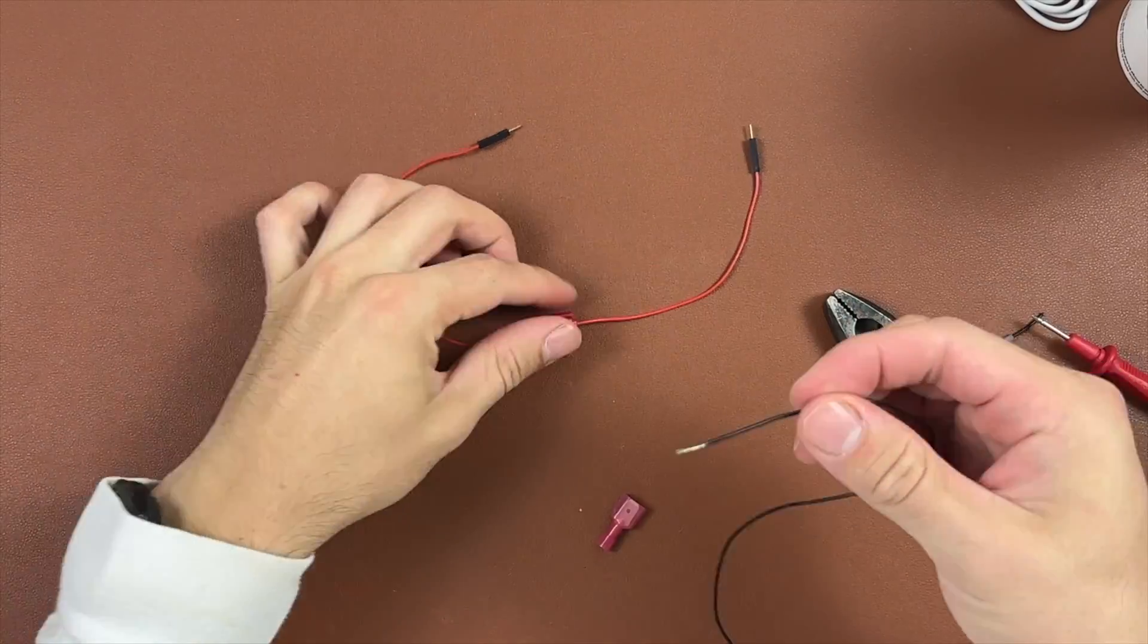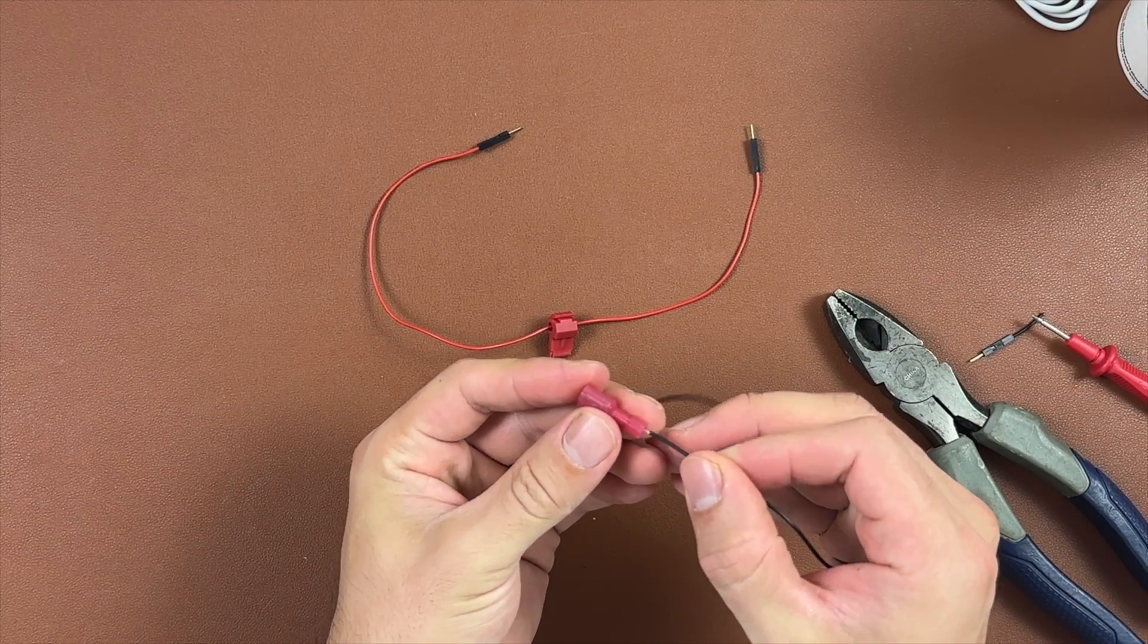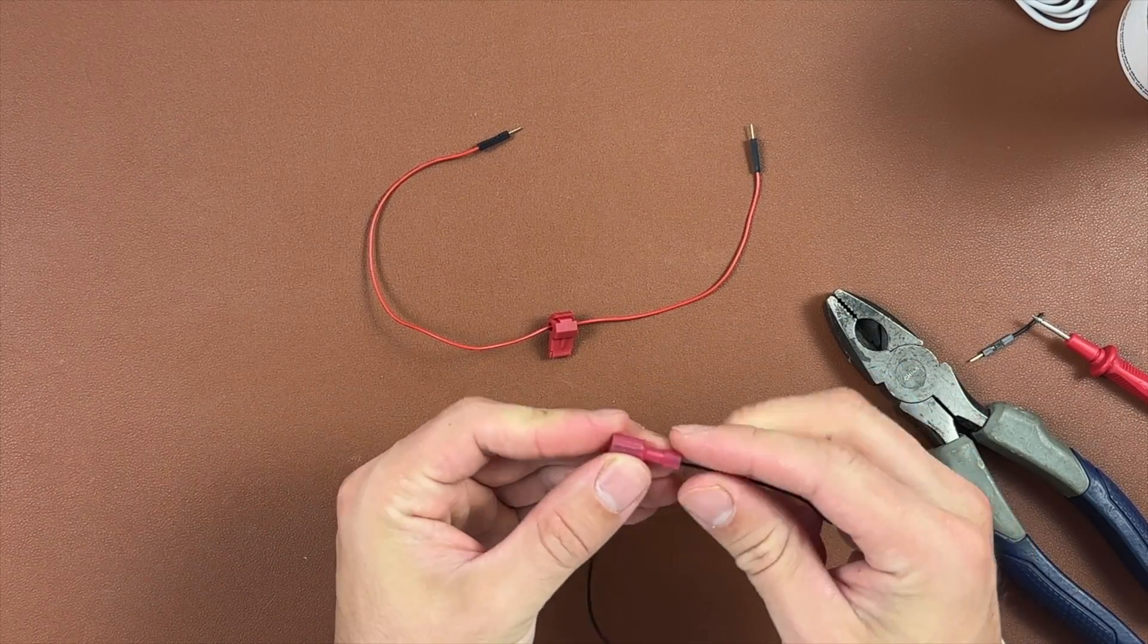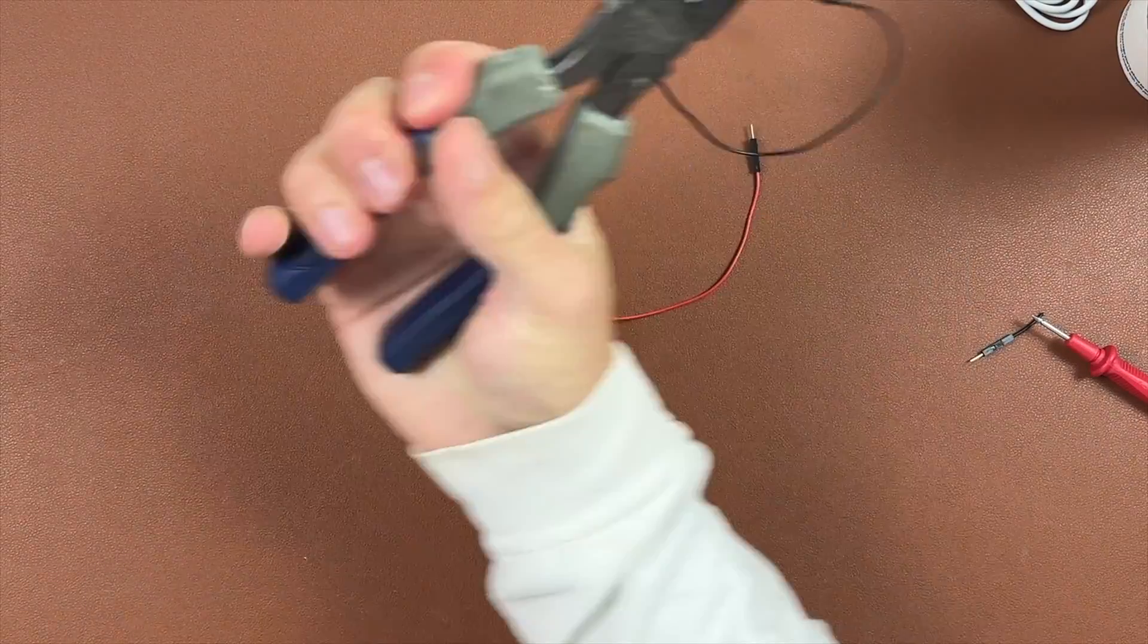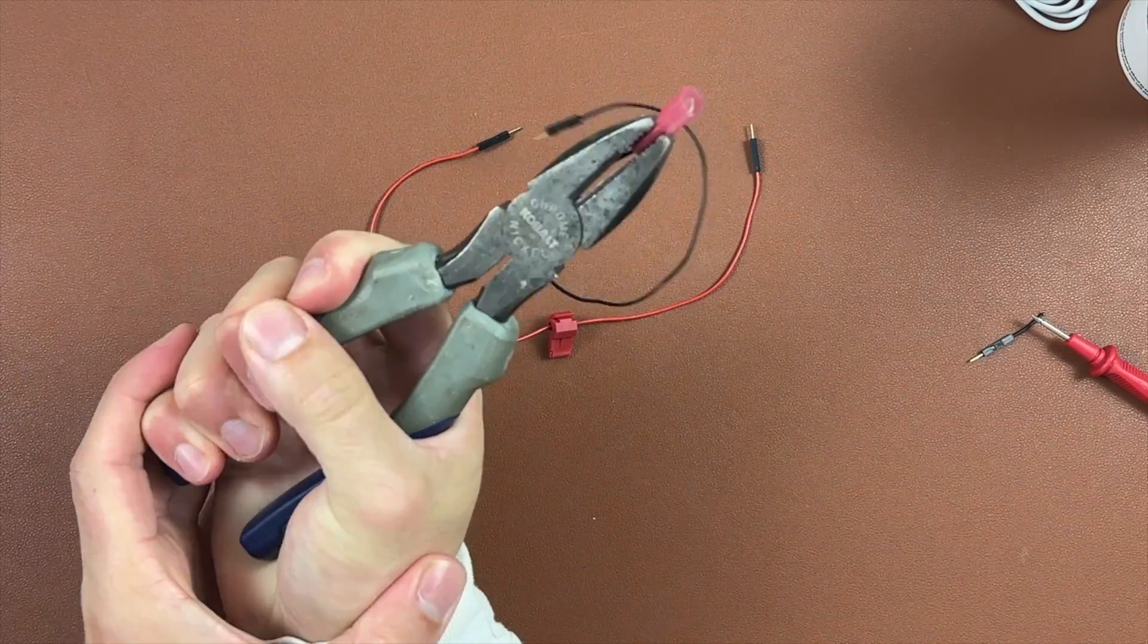I'll show you the standard way of installing it, and then the new and improved reliable way. Standard method: Insert your wire that's getting a tapped connector. Using pliers, squeeze down, and the wire should be crimped.